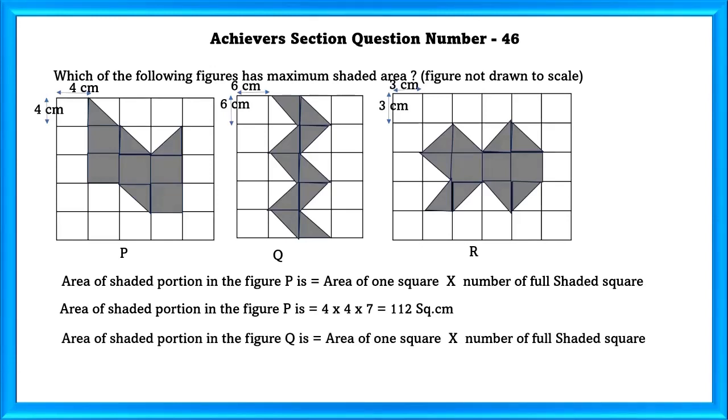Similarly, in figure Q, there are 10 half shaded squares and we can take them as 5 filled shaded squares. Area of shaded portion in figure Q is equal to 180 square centimeters.